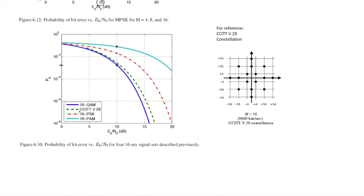There is a modulation that is also plotted here by Michael Rice called CCITT V.29. He shows the constellation for that modulation here. It happens to be used in fax machines.